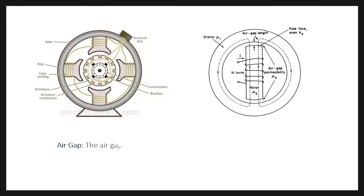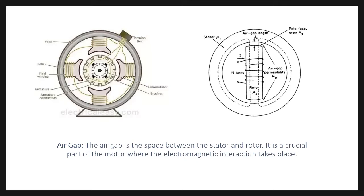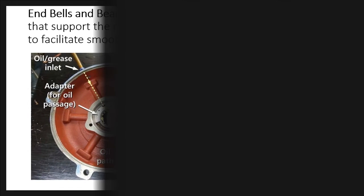Air Gap: The air gap is the space between the stator and rotor. It is a crucial part of the motor where the electromagnetic interaction takes place. End bells and bearings: The motor is enclosed by end bells that support the rotor and stator, and it typically has bearings to facilitate smooth rotation.